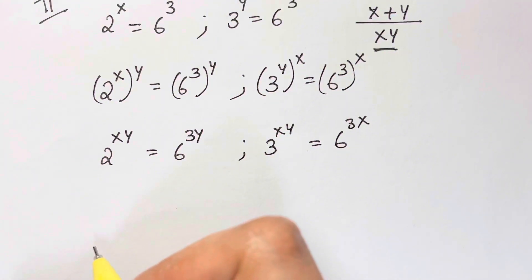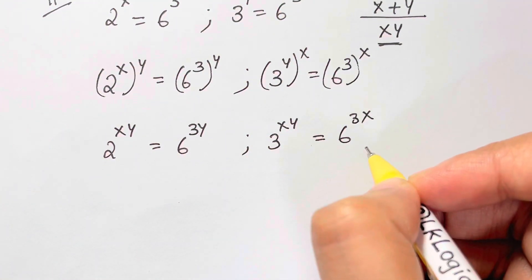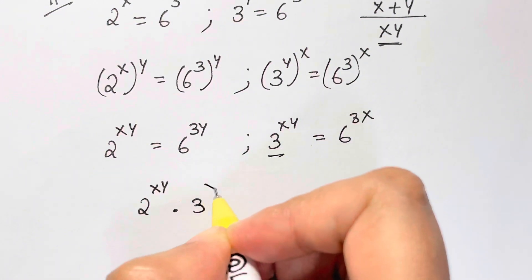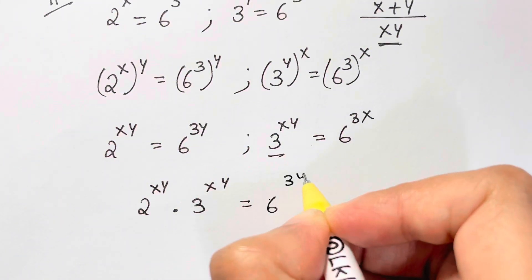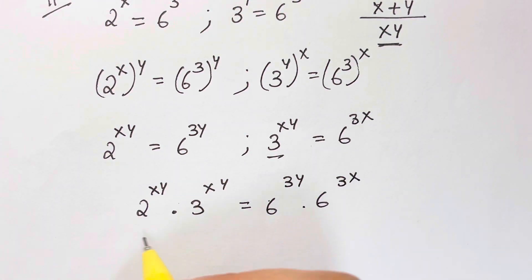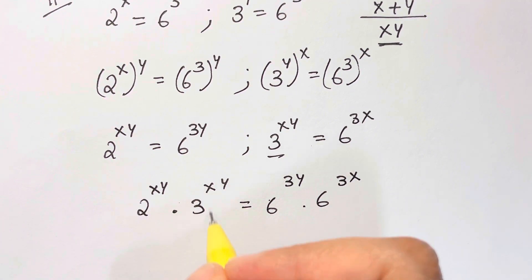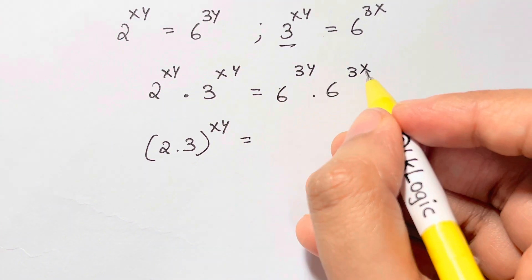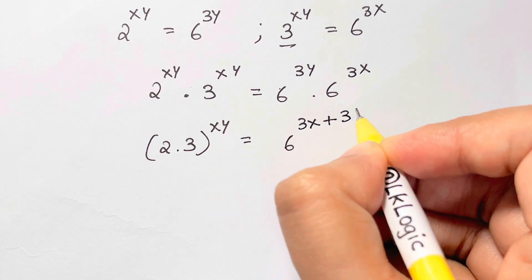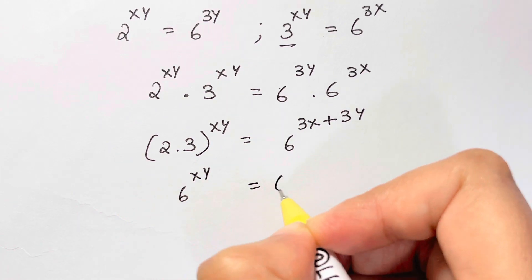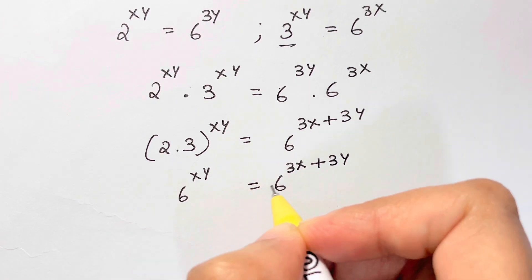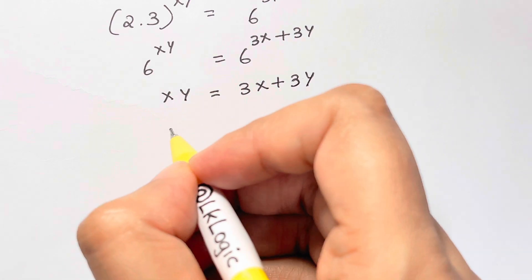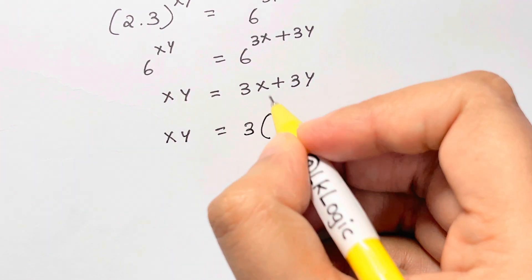This is equation 1 and this is equation 2. Multiplying both equations: 2 to the xy times 3 to the xy equals 6 to the 3y times 6 to the 3x. On the left, same exponent so we write 6 to the power xy. On the right, same base so we add exponents: 6 to the power 3x plus 3y. Since the bases are equal, we equate the powers: xy equals 3x plus 3y, which gives xy equals 3 times x plus y.